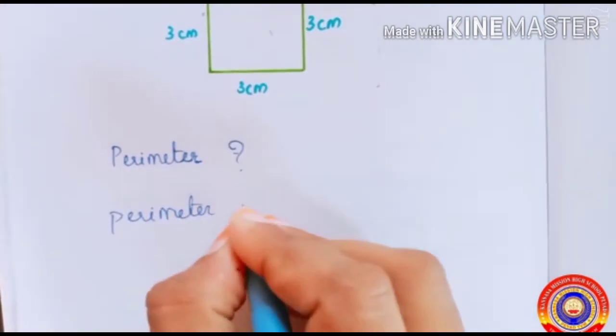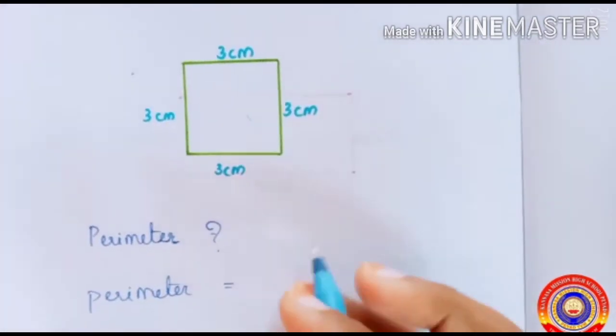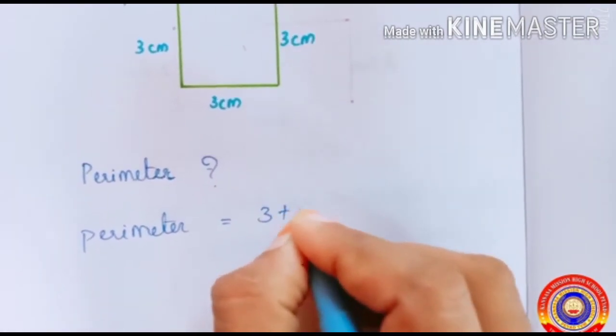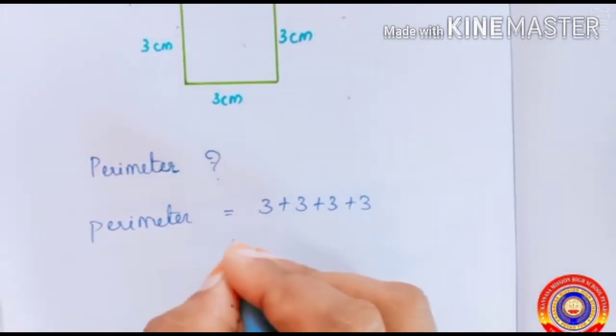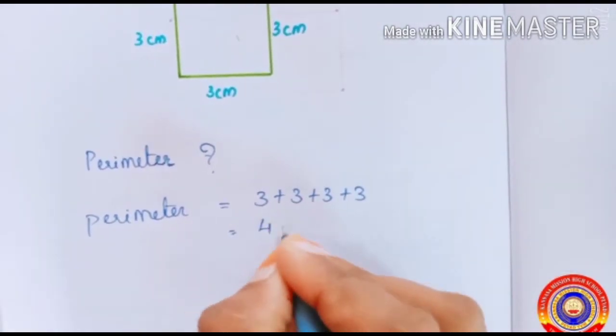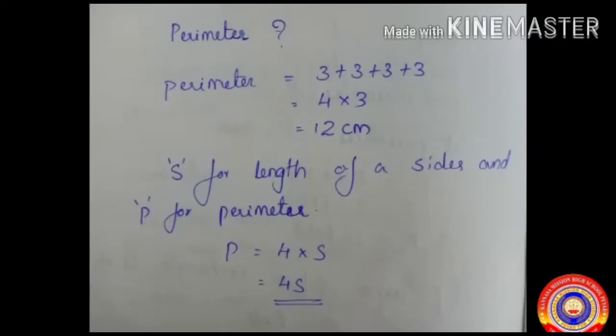Here the side is three centimeters each, that is three plus three plus three plus three. Number of sides of a square is four, that's equal to four into three, that is equal to twelve centimeters.